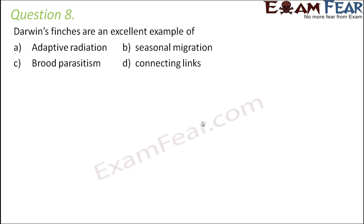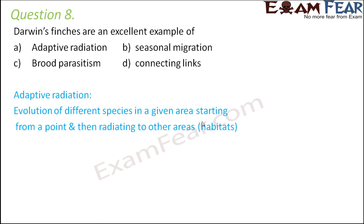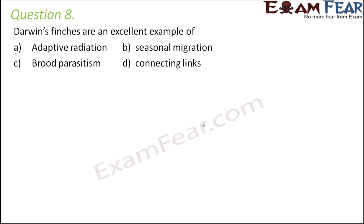Question number 8. Darwin's finches are an excellent example of: adaptive radiation, seasonal migration, brood parasitism, or connecting link? Looking at the story of Darwin's finches: in the Galapagos Islands, a few finches initially arrived, and over a period of time from those finches, many more finches were formed through small changes that took place just for their survival. Eventually, from one species of finch, it reached about 15 to 20 species — this is an example of adaptive radiation.